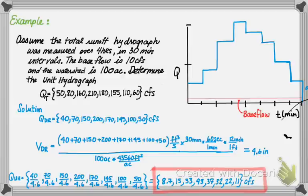From 0 to 30 minutes, we have 8.7 CFS. From 30 to 60 minutes, we have 15 CFS, and so on.